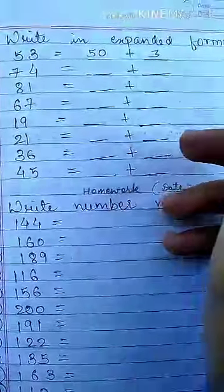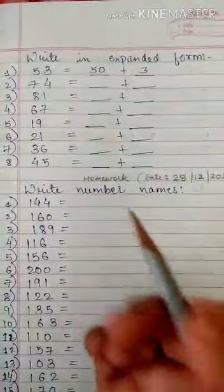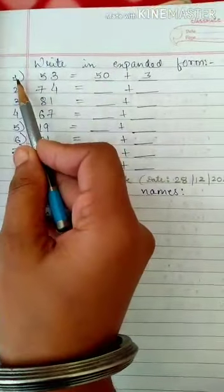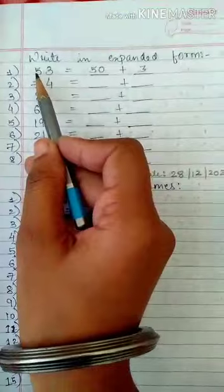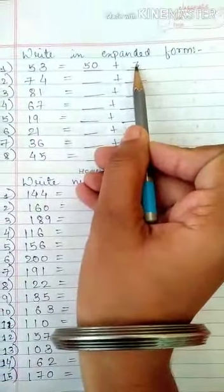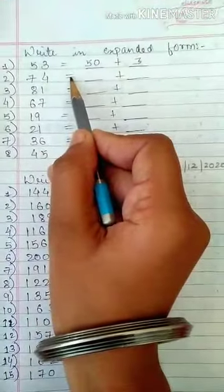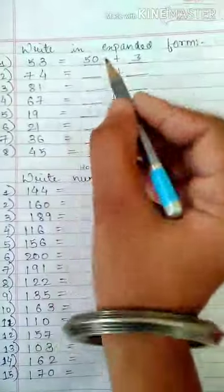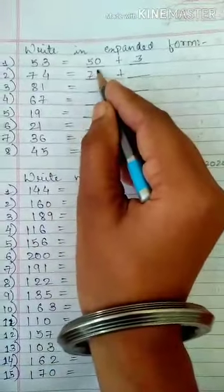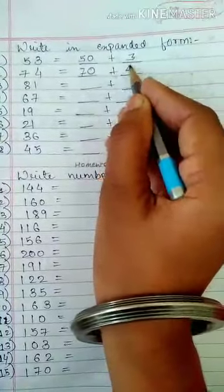Write in expanded form. What does expanded form mean? Expanded form means, question number 1, like example, 53 is equal to 50 plus 3. Okay? Second, 74 is equal to what will happen? Any guesses? 70 plus 4.